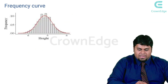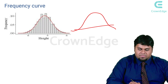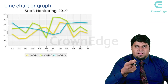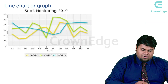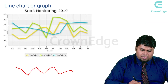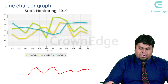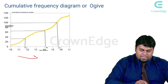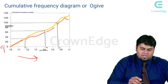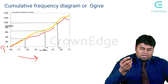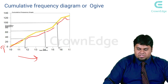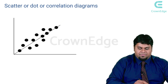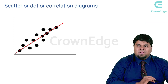A frequency curve is a continuous curve representing the trend of the entire data in terms of the frequencies of the distribution. A line chart or line graph, commonly seen in newspapers and journals, shows the trend of a disease over time — starting from a certain point and tracking distribution across multiple time periods. A cumulative frequency diagram, also called an ogive, shows the cumulative frequency distribution for a data element. A scatter plot diagram places dots for each data point, and a line through the maximum number of dots shows the linear relationship between variables.